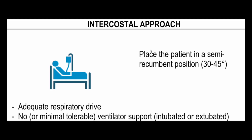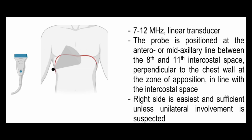The second approach is the intercostal approach — between the ribs. Place the patient in the same semi-recumbent position and check both respiratory drive and ventilatory support criteria as discussed. Use a linear probe at 7 to 12 MHz. The probe is positioned at the antero- to mid-axillary line between the 8th and 11th intercostal spaces, perpendicular to the chest wall at the zone of apposition.